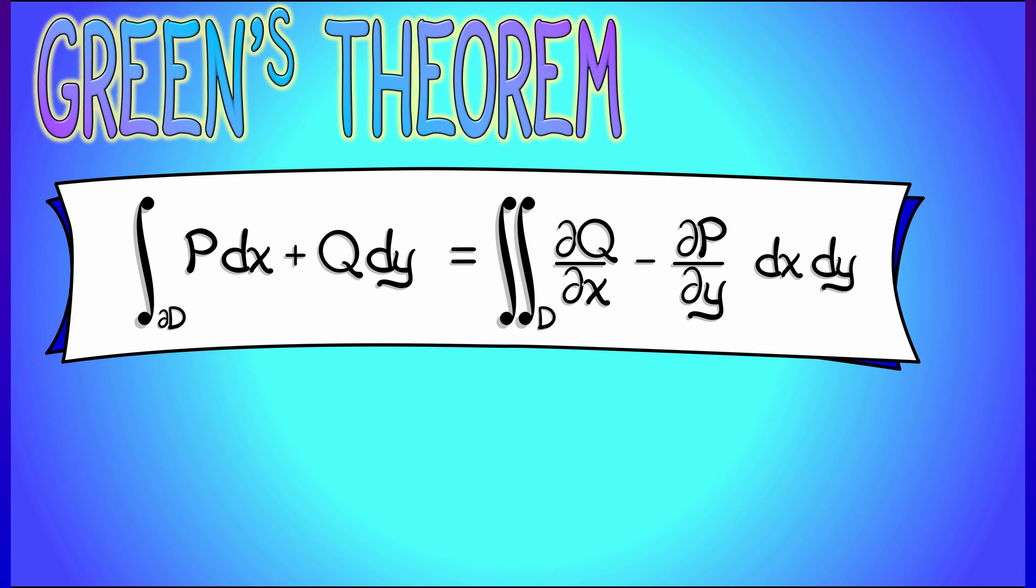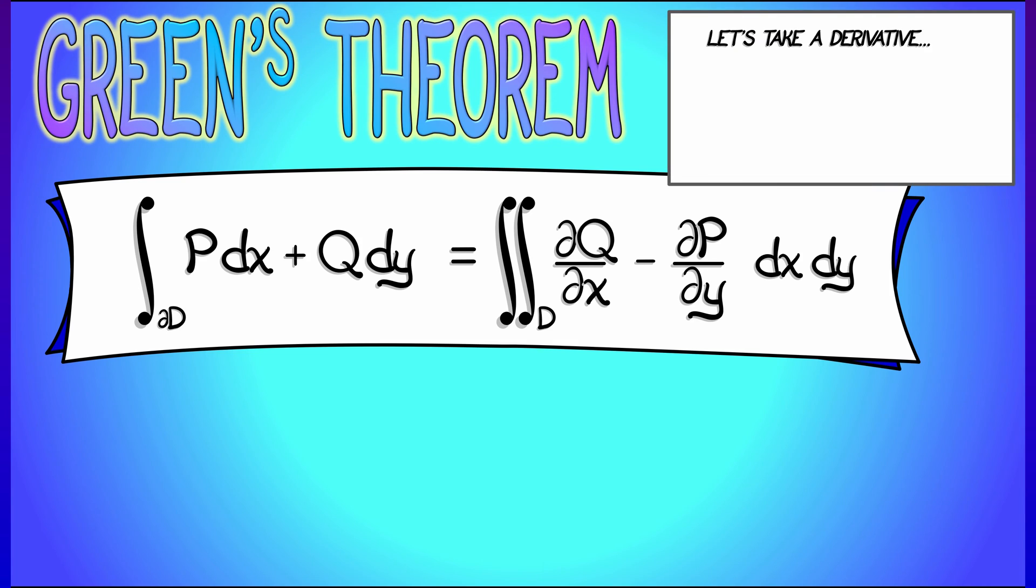Students struggle with how to remember that. Why is there that minus sign? Why is it in front of the p term? Why isn't there a partial q partial y? All these questions—let's think using the language that we now know. Let's rewrite that one form, pdx plus qdy, as alpha. Consider what happens when you take the derivative of this one-form field. You get what?